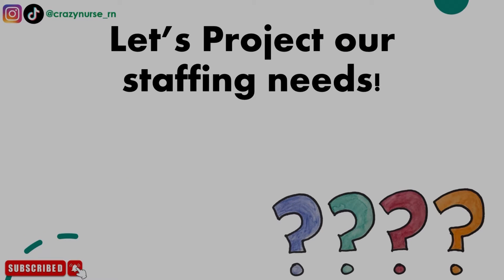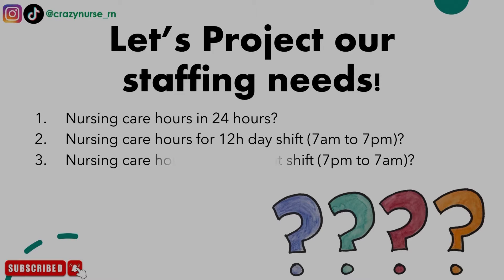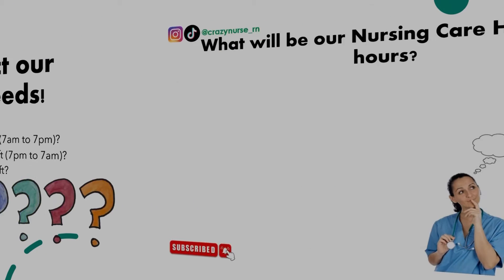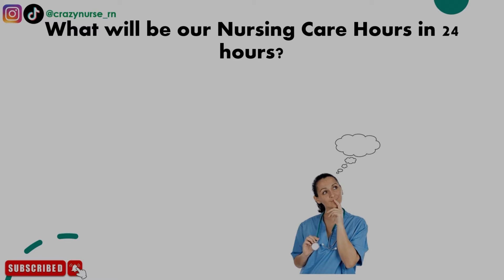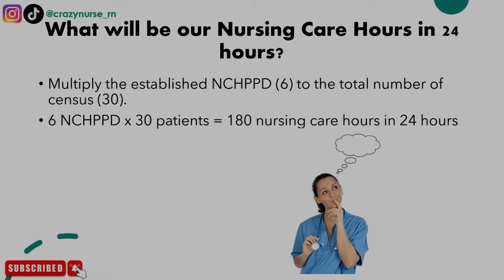Now let's project our staffing needs. We need to answer: nursing care hours in 24 hours, nursing care hours for the 12-hour day shift (7 a.m. to 7 p.m.), nursing care hours for the 12-hour night shift (7 p.m. to 7 a.m.), and the number of staff needed for each shift. To find nursing care hours in 24 hours, multiply the established NCH-PPD of 6 by the total census of 30 patients: 6 × 30 = 180 nursing care hours in 24 hours.